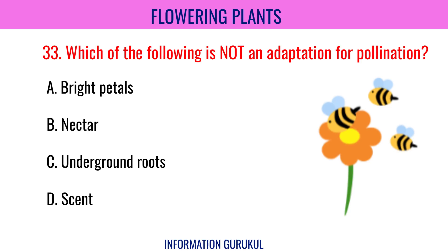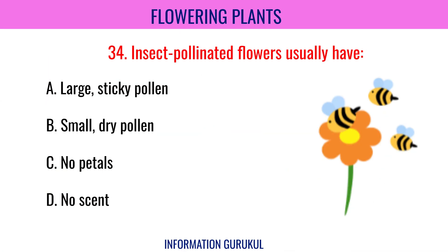Which of the following is not an adaptation for pollination? Underground roots. Insect-pollinated flowers usually have large, sticky pollen.